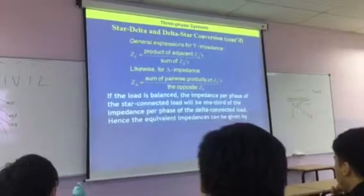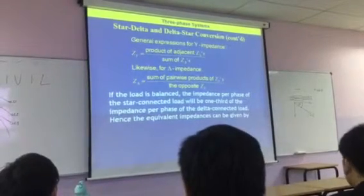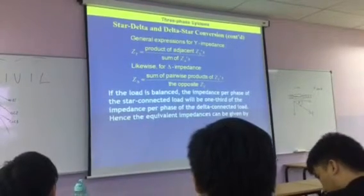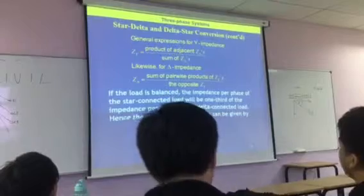So what we can say from that is, if the load is balanced, the impedance per phase of the star-connected load will be one-third of the impedance per phase of the delta-connected load. Hence, the equivalent impedances can be given by.